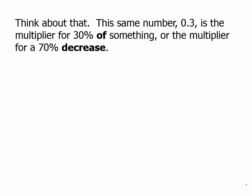Think about that. This same number 0.3 is the multiplier for 30% of something or the multiplier for a 70% decrease. How can that be?